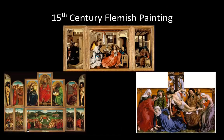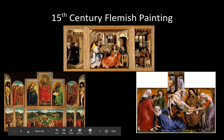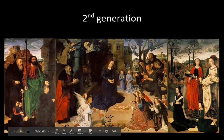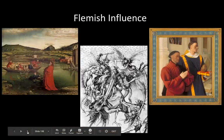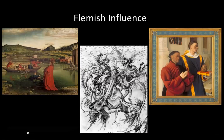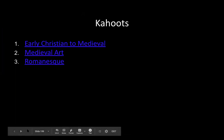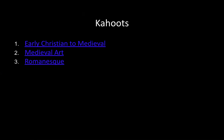Here are some other images of Flemish painting — the second generation that happens afterwards — and you can see that style continues, with people learning from Campin and Van Eyck. We're going to play one Kahoot to review, since we've been in medieval art before and after break. There are two more review Kahoots here if you want to do them on your own. And remember, we have our quiz on Thursday.